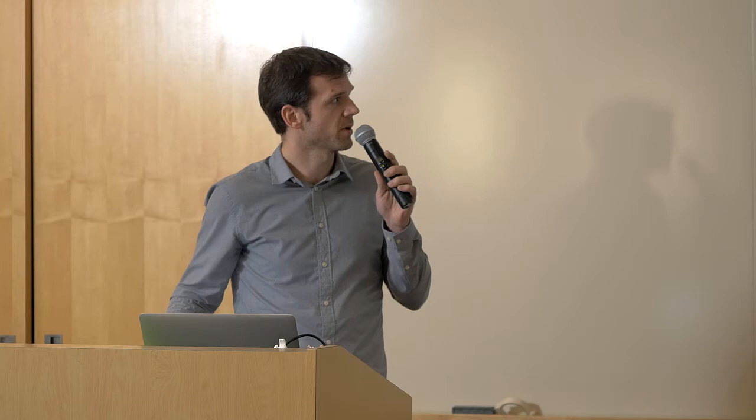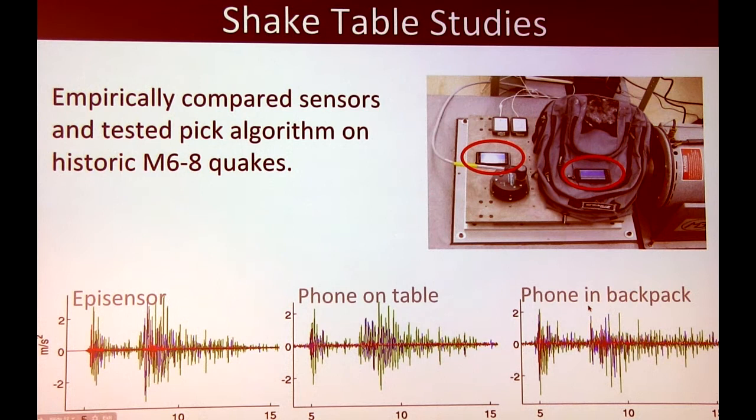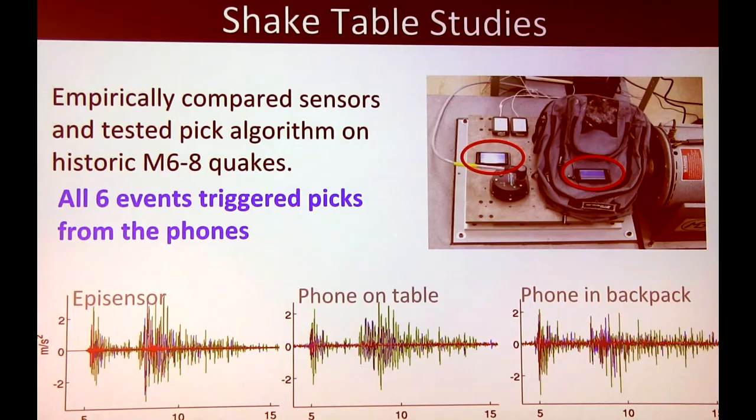We also tested these different sensor types on a shake table to determine whether we could record the shaking necessary to get earthquake information. For the reference sensor at the epicenter, you can see what the shake table generated. For a phone on a table and a phone in a backpack, the waveforms generated aren't nearly as clear, but they're still quite discernible and we're able to determine whether an event is ongoing. All six events we tested — playing back known earthquake events through the shake table — were triggered by both the phones and the USB accelerometers.